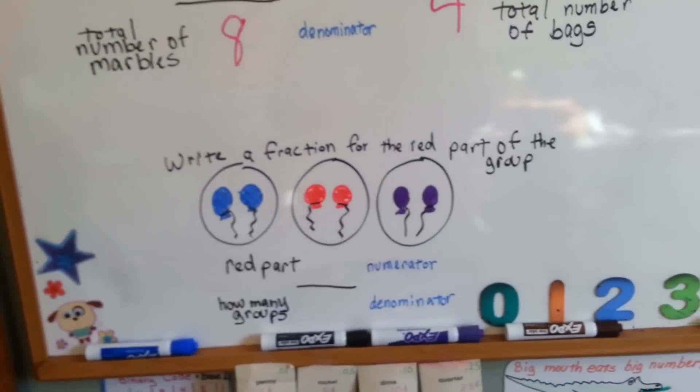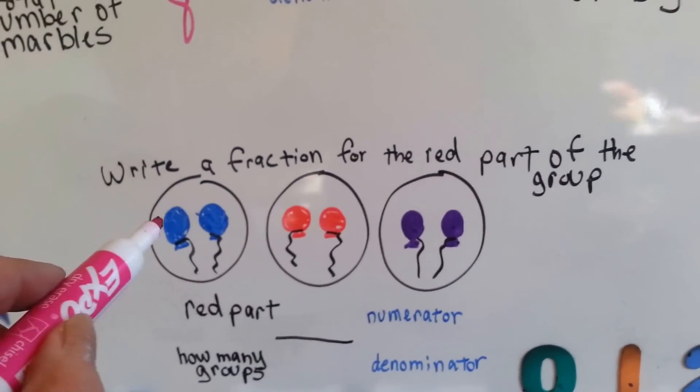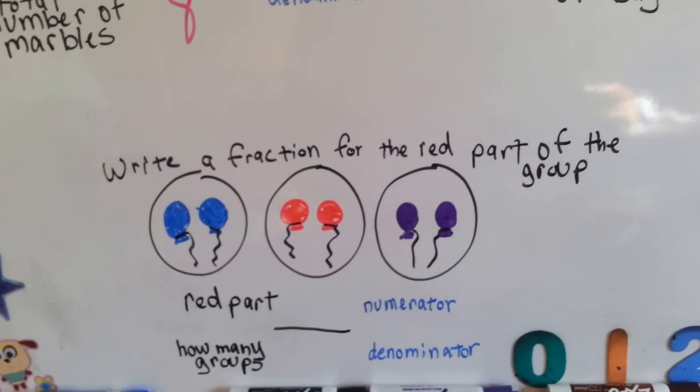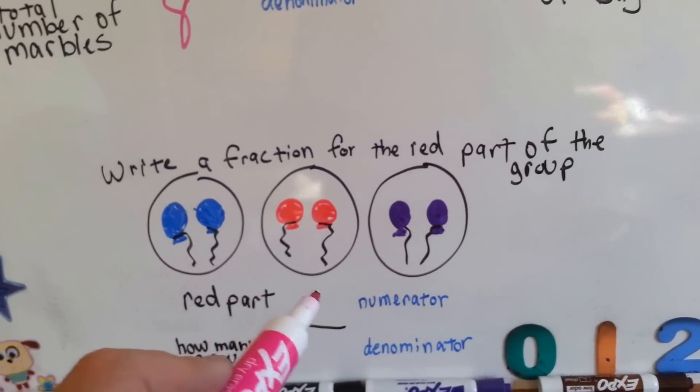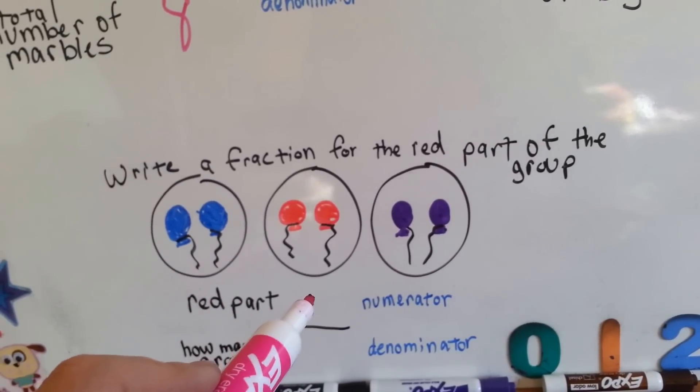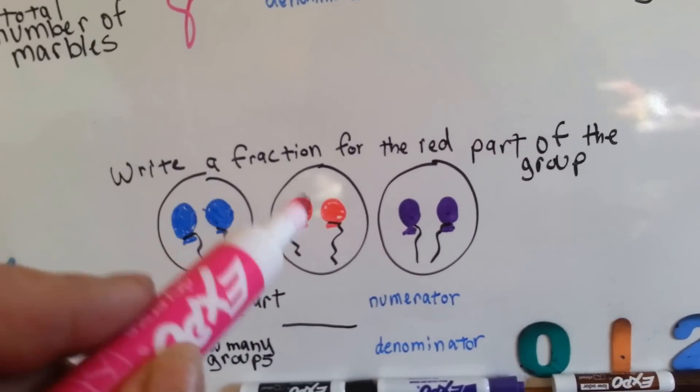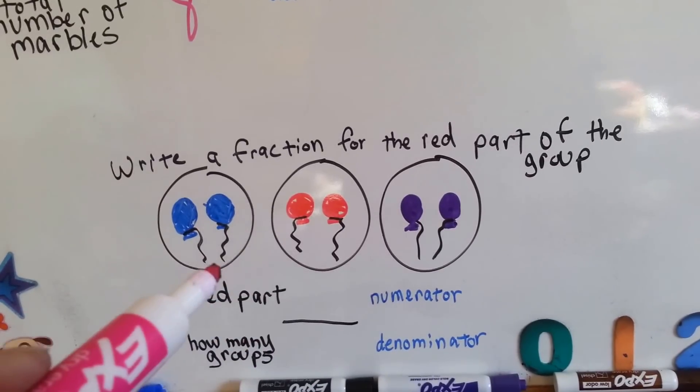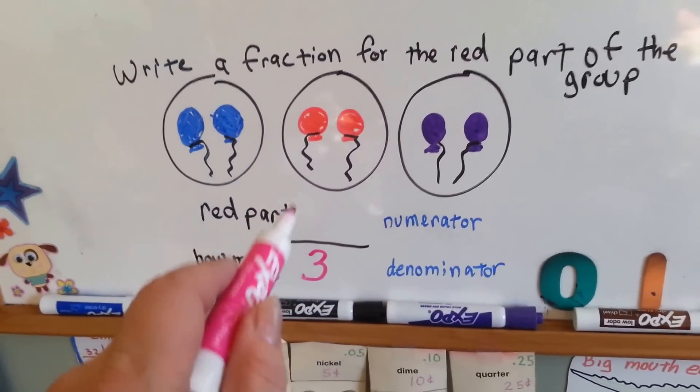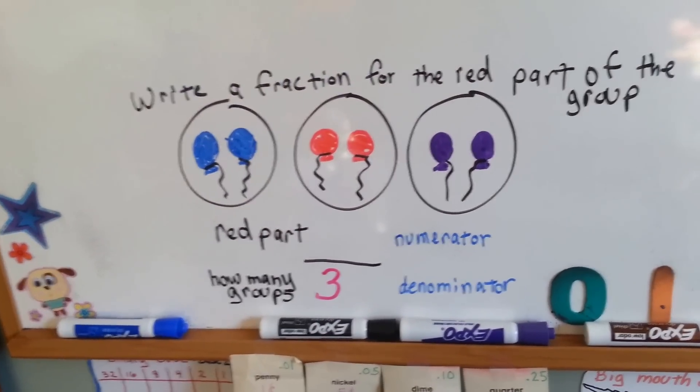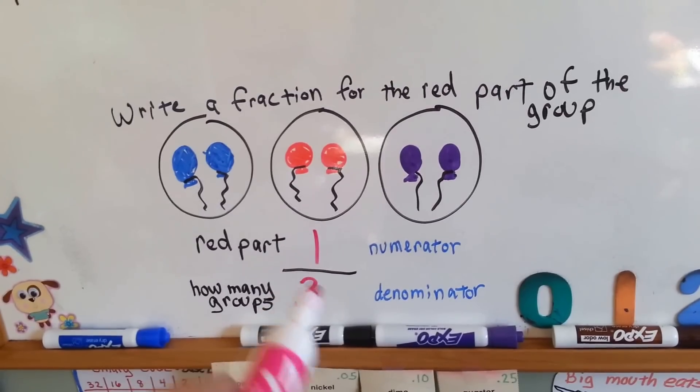So let's take a look at this one. If you needed to write a fraction for the red part of this group, we've got two blue balloons, two red balloons, and two purple balloons. What part of the group is red? How many parts are red? There's one, two, three parts. There's three groups. So we know there's three groups. How many groups have red? Just one, the center one. So one third of these groups have red balloons in them.